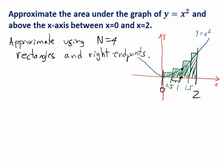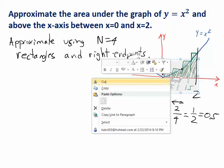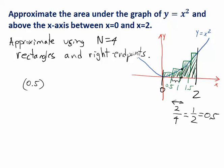How wide is each rectangle? The whole interval from zero to two is two units wide, and we divided that into four rectangles of equal width, so each rectangle is one half or 0.5 units wide. The first rectangle has a height that you get by plugging the right endpoint, 0.5, into the function y equals x squared — so you square that, and that's the height of the first rectangle. If you then multiply that by 0.5, which represents the width of the first rectangle, then this quantity is the area of the first rectangle.